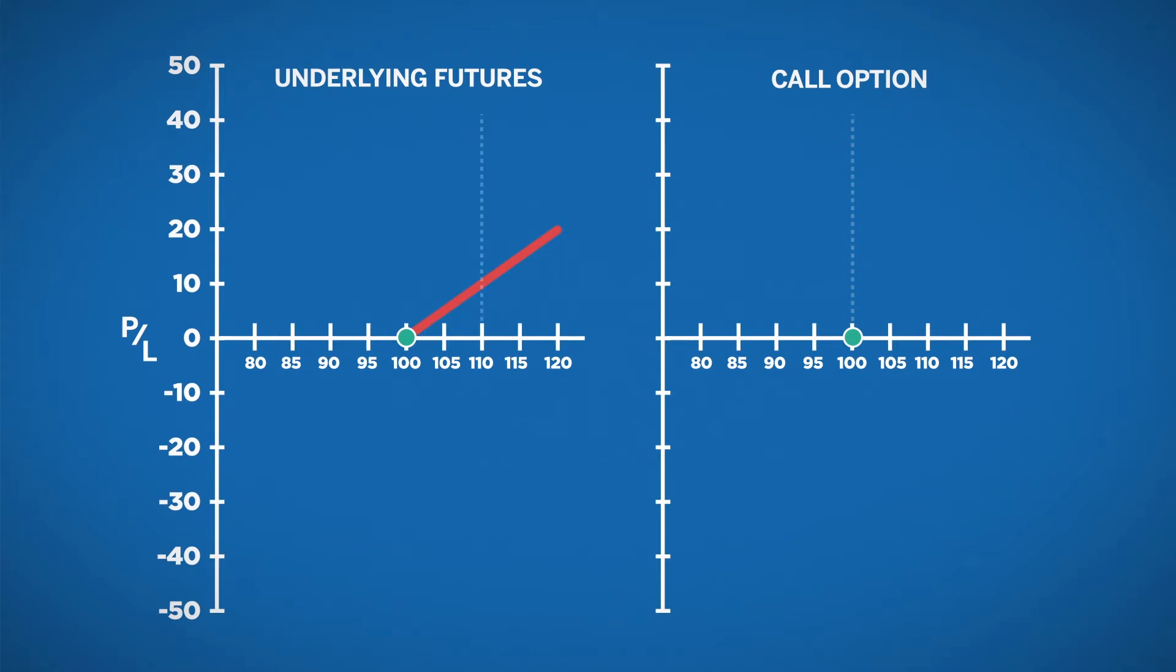The call option has a similar profit potential to a long future. When prices move upward, the call owner can exercise the option to buy the future at the original strike price.